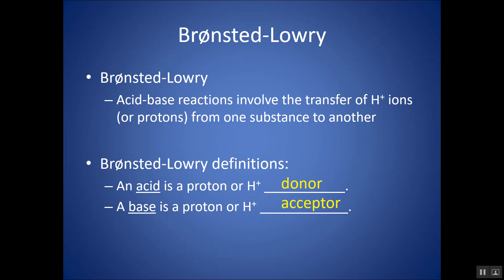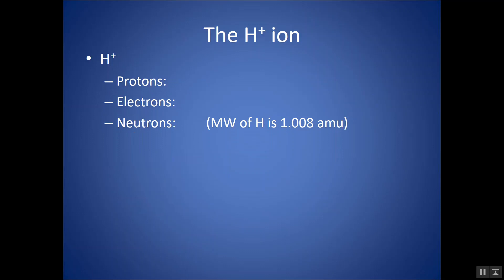H+ and proton are actually the same thing. If you look up H on the periodic table, it has an atomic number of one, so there's one proton. The plus sign means it has lost its electrons, so now it has no electrons. The molar mass of H is 1.008 AMU, so we know a proton weighs one AMU, meaning H contains only a proton and no neutrons. So H+ is a proton.